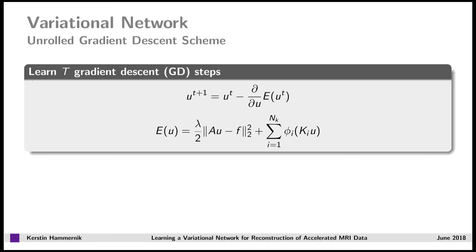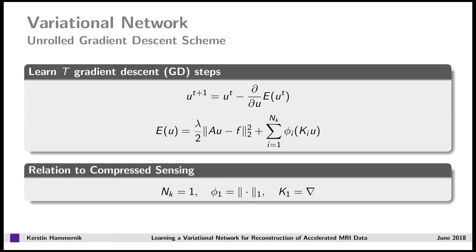The interior structure of the variational network looks as follows. We said that we want to learn the entire reconstruction algorithm, which is in our case a sequence of t-optimal gradient descent steps. The gradient of these gradient descent steps corresponds to the gradient of our general compressed sensing energy functional. Note here that if we would use a single regularization term with fixed L1 norm and the gradient operator, we would end up in the total variation formulation.